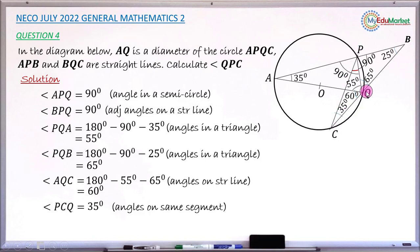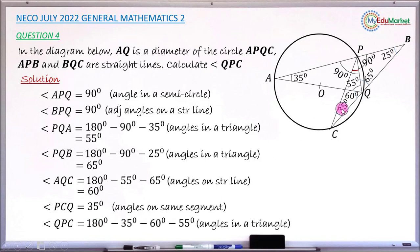Now I can concentrate on triangle PCQ to find angle QPC, which is an angle inside that triangle. I have angle PCQ as 35°, and the angle at Q as 55 plus 60 degrees. Using sum of angles in a triangle: angle QPC equals 180 minus 35 minus 60 minus 55, which gives 30 degrees. Therefore, angle QPC equals 30 degrees.